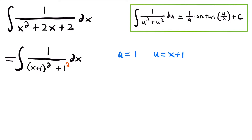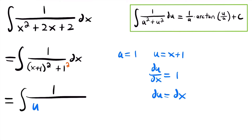Now we continue with the u-substitution process by taking the derivative of u. So du/dx equals the derivative of x, which is 1, plus the derivative of the constant 1, which is 0. So the derivative of u equals 1. Multiplying both sides by dx, we get du = dx. So now we can rewrite this integral in terms of u: the integral of 1 divided by u² + 1², times du.